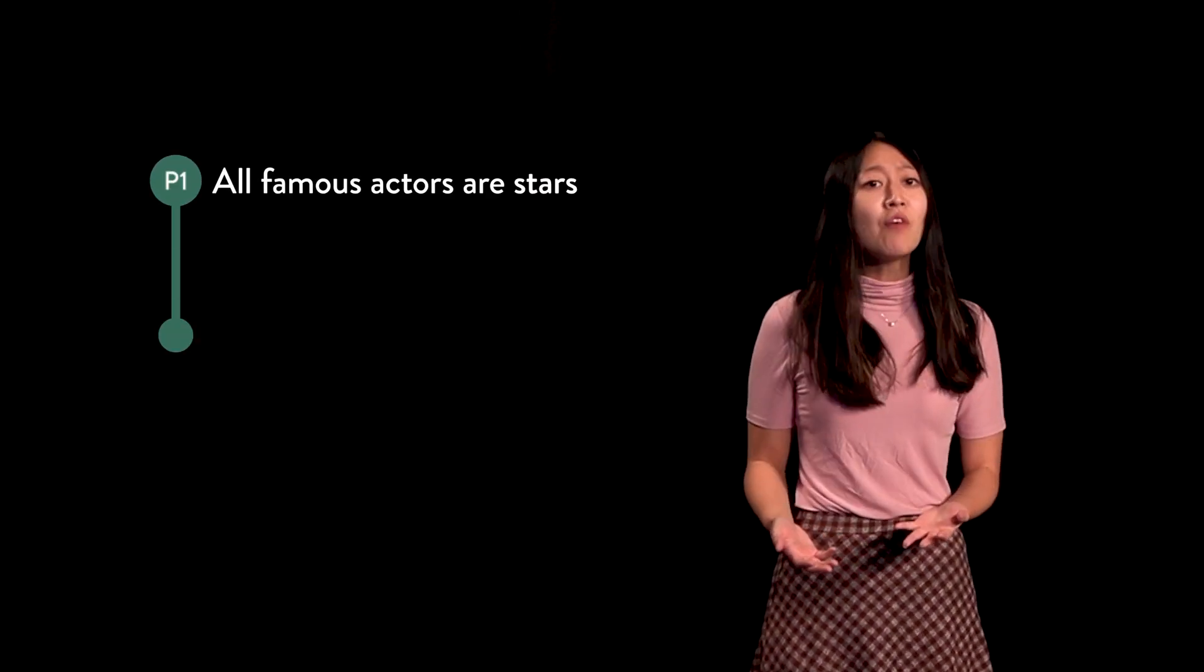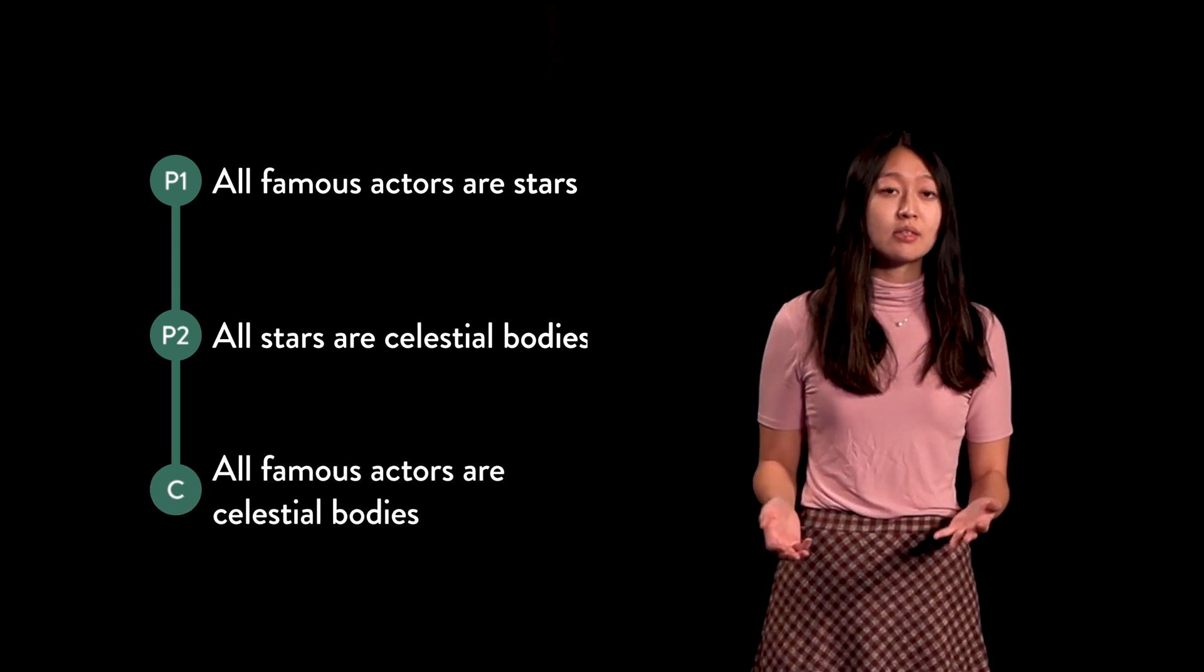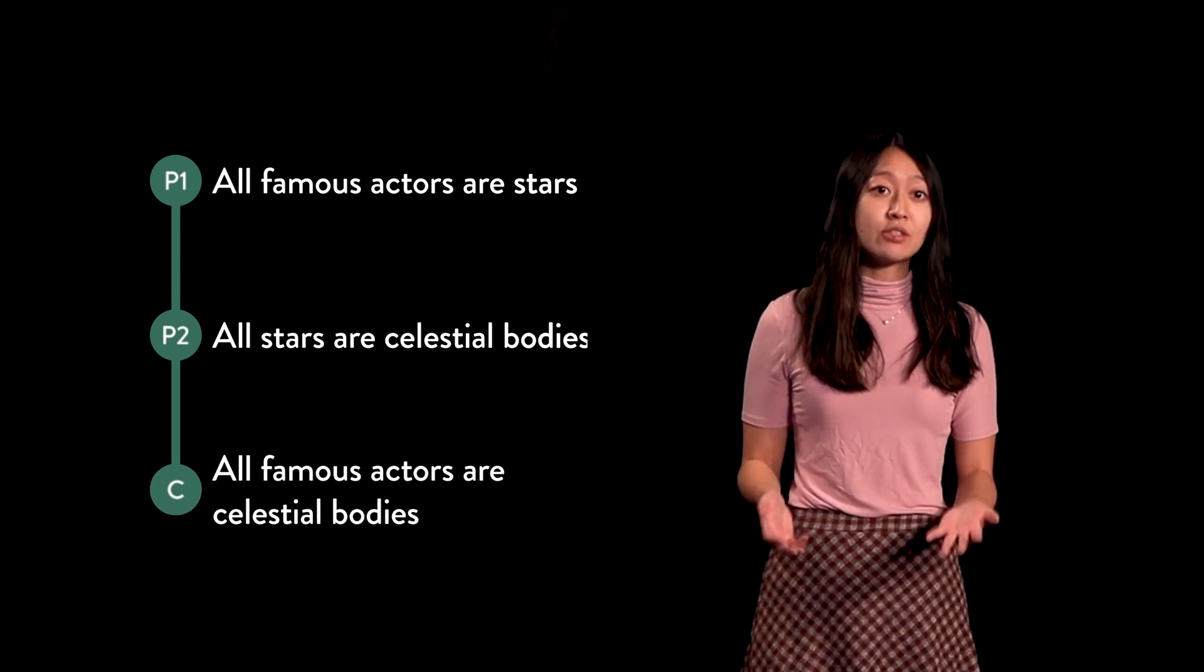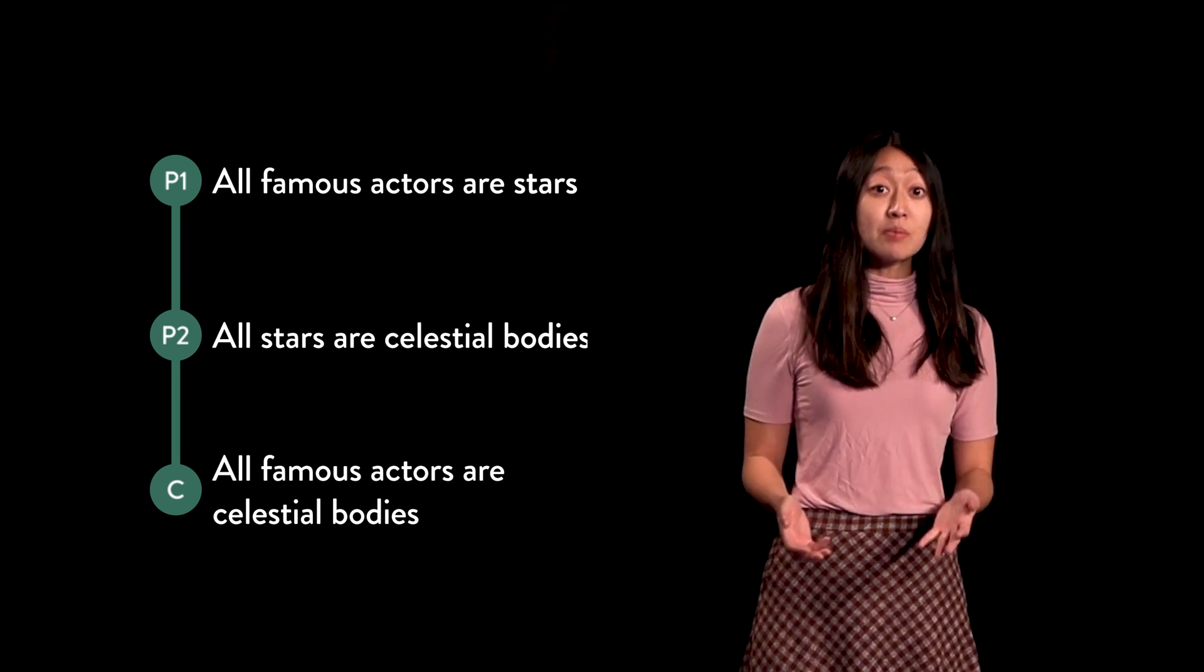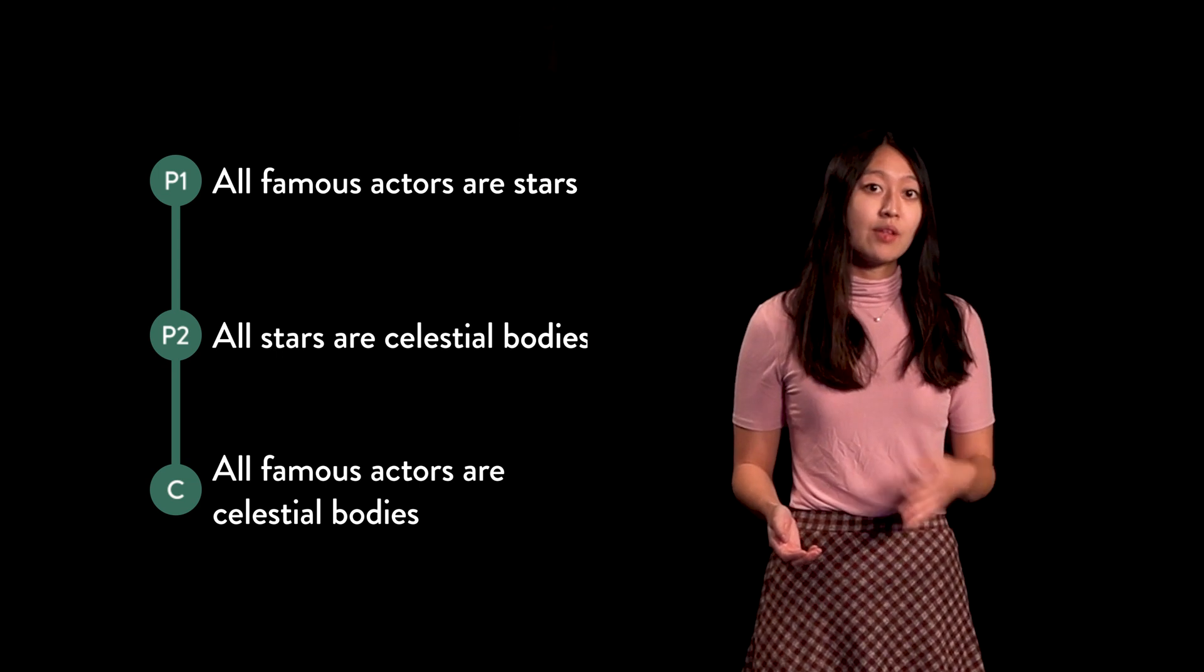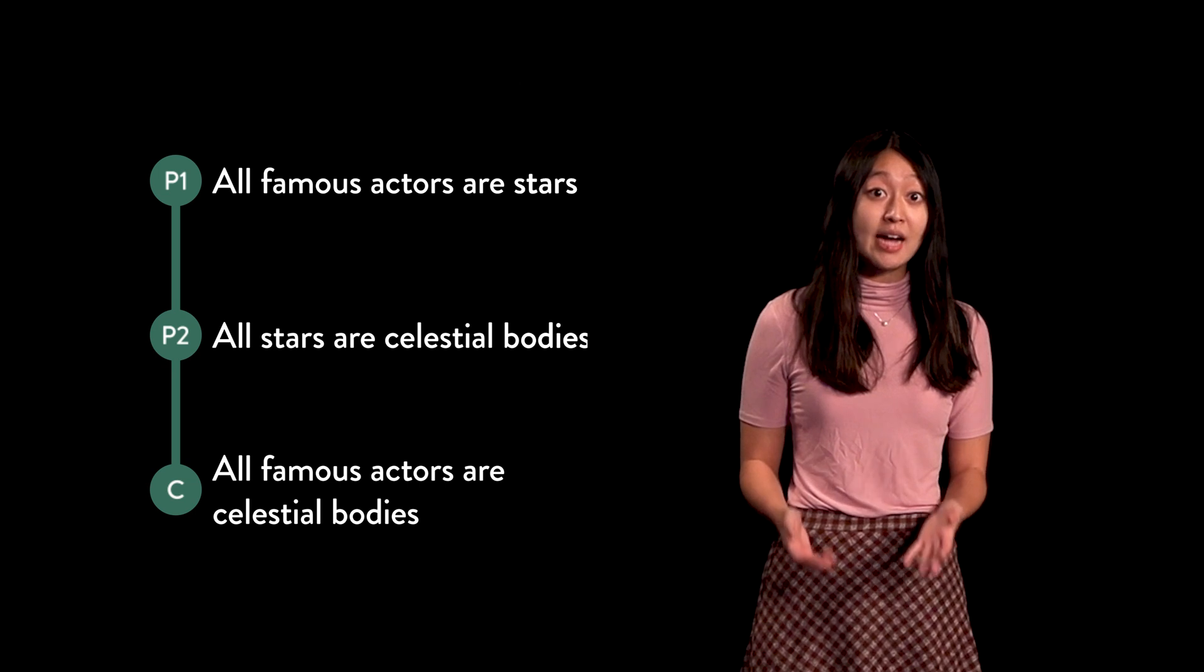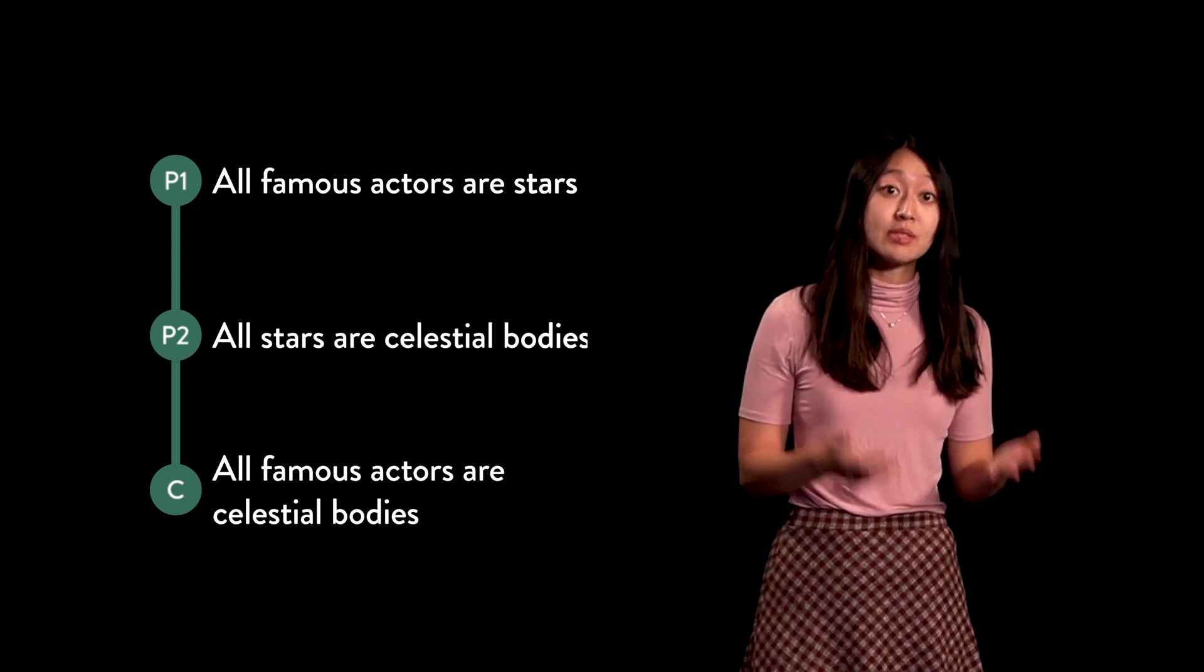Sometimes syllogisms are unsound because of vague or ambiguous terms. This can happen even if the syllogism is valid and the premises are true. Consider the following argument which we went over in the last lesson. Premise one: all famous actors are stars. Premise two: all stars are celestial bodies. Conclusion: all famous actors are celestial bodies. This argument uses two different meanings of the word star, one in each premise. This is an instance of ambiguity. The term star is ambiguous because it is used to refer to different categories in the world during the same syllogism.